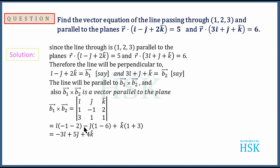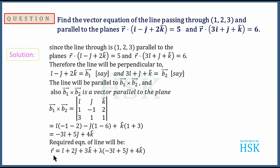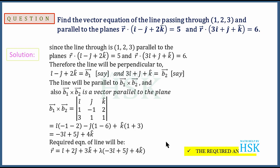This is the vector parallel to both planes. Therefore, the required equation of the line is r equals (i plus 2j plus 3k) plus lambda times (minus 3i plus 5j plus 4k), applying the vector form r equals a plus lambda b, where a is the point on the line and b is the direction vector.